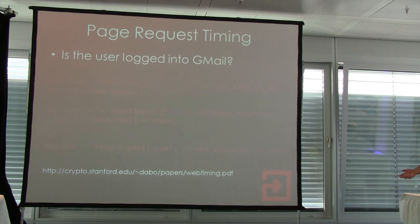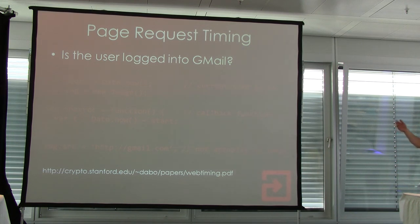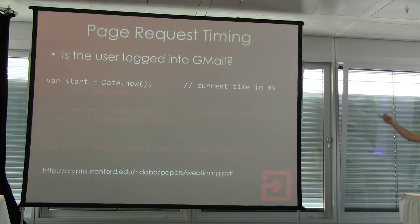Just before I talk about that, I'm going to show you a simple example of a timing attack. This is a really old thing that's been possible in browsers for years and years and it can't really be fixed — it's a good example of the basics. So the question is: are you logged into Gmail? Here's some JavaScript that can help us find this out. First of all, we get the current time using date.now in JavaScript, which gives us the current time in milliseconds. And then we create a new image.